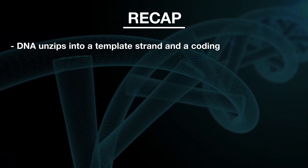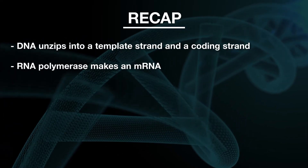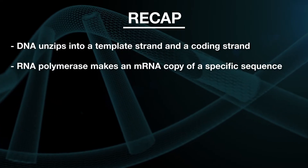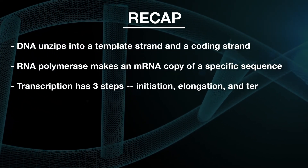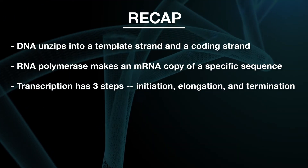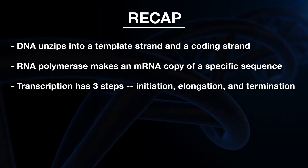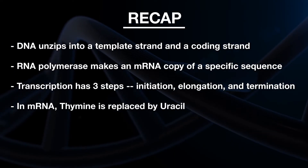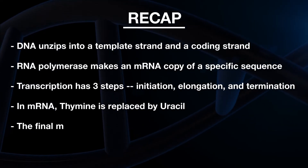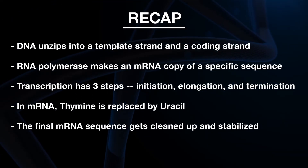But that's in our next video. First, let's do a quick recap. DNA is unzipped into a coding strand and a template strand. RNA polymerase binds to that template strand to transcribe it, creating mRNA. Transcription occurs in three steps: initiation, elongation, and termination. When transcription is done, that sequence is going to look a lot like the coding strand from the DNA, except since it's RNA, all of the thymines will be replaced by uracils. But that's not it for the mRNA — before it gets shipped off for translation, that strand needs to be cleaned up and stabilized. So now you understand transcription. In the next video, we're going to talk about how this transcribed piece of mRNA is going to be turned into a protein through a process called translation. Stay tuned.